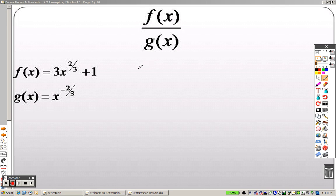And basically here's what we need to do. This is just f of x divided by g of x. So it's 3x to the 2 thirds plus 1 divided by x to the negative 2 thirds.